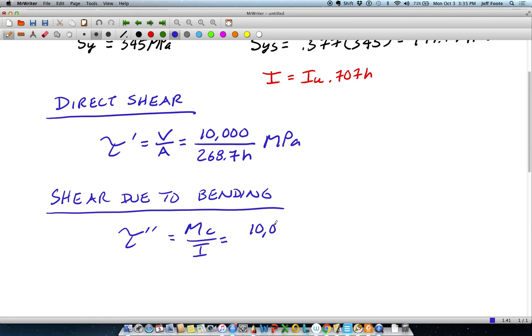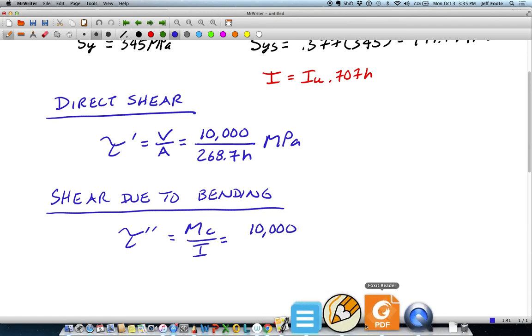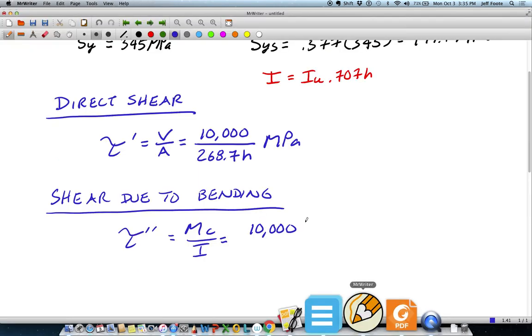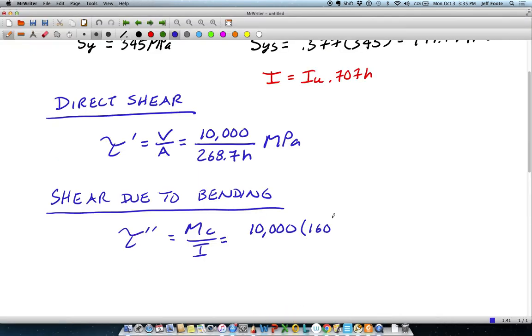The moment will be our force of 10,000. It's offset at a distance of 160 millimeters. C is the half height of the section. We're bending about the x-axis, so the half height about that axis is 60 millimeters. Then I is as stated above. It's IU.